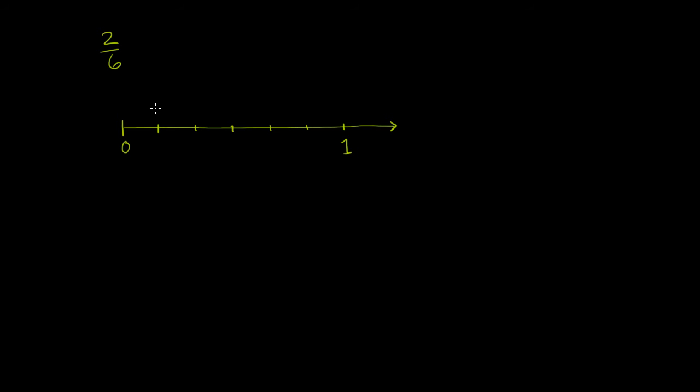So this is one of the six. Then this is another of the six, so that gets us to 2 sixths. If we go another one, we get to 3 sixths. We go another one, we get to 4 sixths. Then 5 sixths. Then this is 6 sixths, which is the same thing as 1.